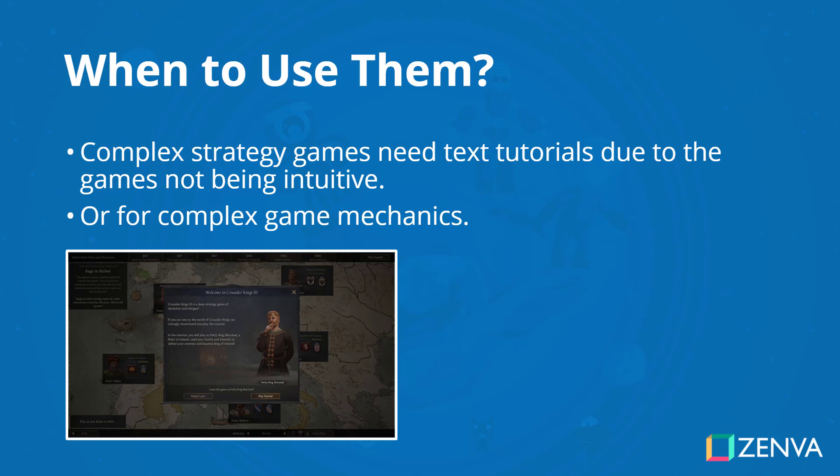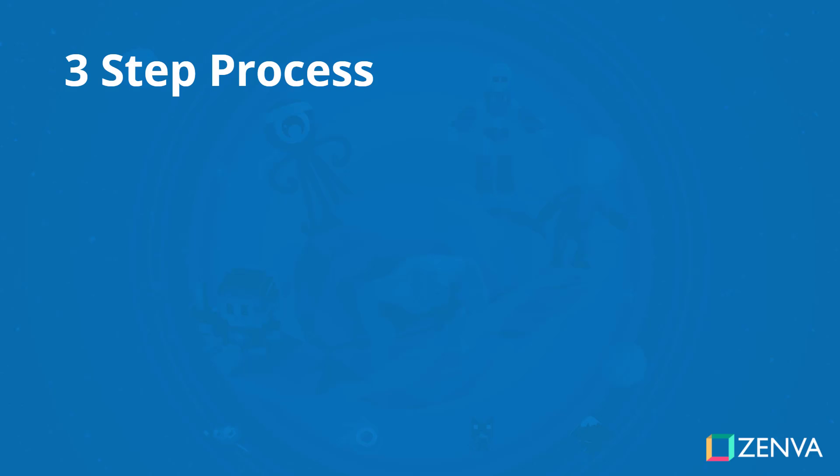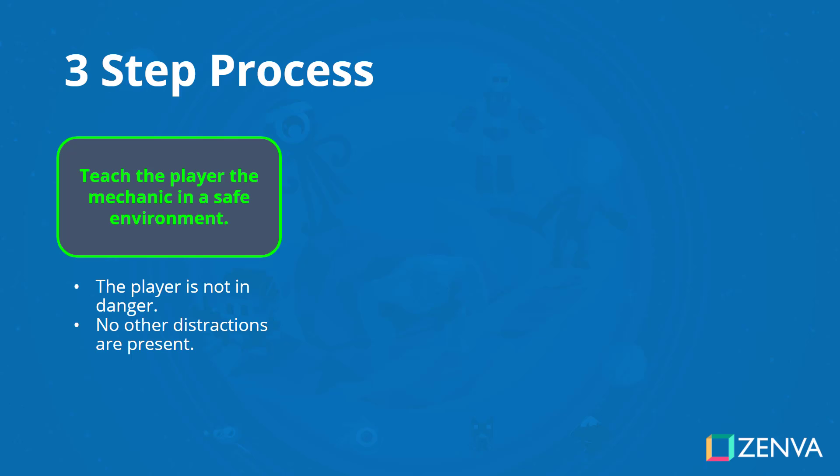But what do I mean about teaching through the level design and the mechanics themselves being intuitive? Well, there is a three-step process that many games follow. If you've ever played a game where a mechanic is introduced to you, there's a chance that this is what has happened. So, first step: we teach the player the mechanic in a safe environment. The player is not in danger and there are no other distractions present.